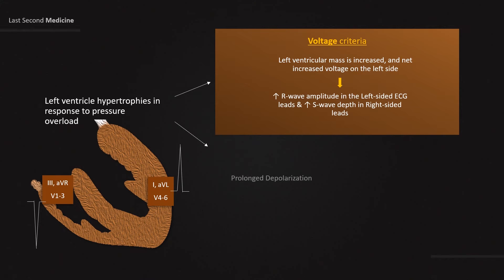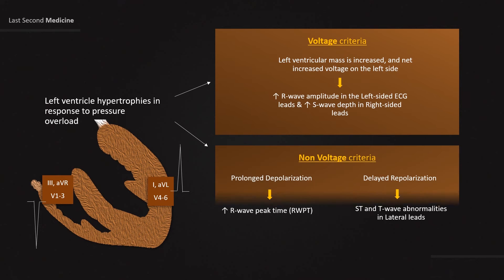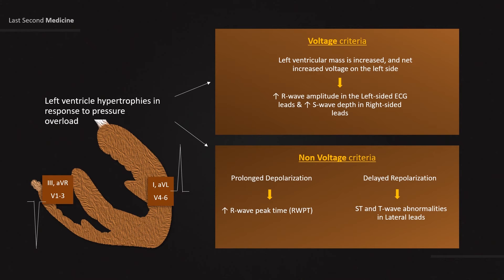The thickened LV wall leads to prolonged depolarization, and there is also delayed repolarization. This prolonged depolarization causes increased R-wave peak time, and delayed repolarization causes ST and T-wave abnormalities in the lateral leads. This is the basis of non-voltage ECG criteria for LVH.